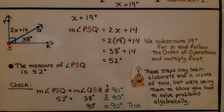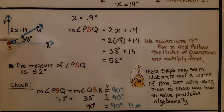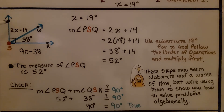These steps may seem elaborate, but we're using them to show how to solve problems algebraically — skills you'll be able to use in high school and higher algebra. You might think: if I know this is 38 degrees and that's 2x plus 14, I can just do 90 minus 38. That's true — you could do that to find the measure of angle PSQ — but we're demonstrating the algebraic approach.